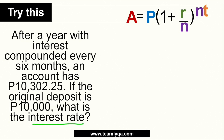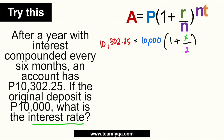So we plug in all the information. The accrued amount is 10,302.25, equal to P — the principal — which is 10,000. Then you have 1 plus R, where R becomes X since it's our unknown, over N. N is every 6 months so that's 2. Then times T — the time is a year, so T equals 1.